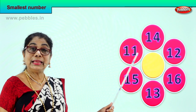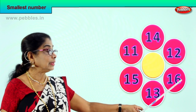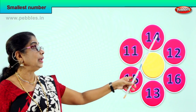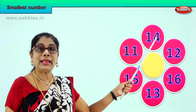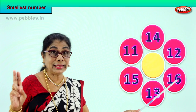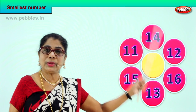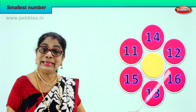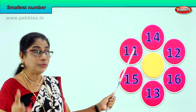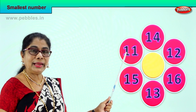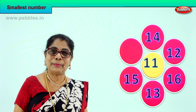Look — 11 has 1 ten, 15 has 1 ten, 13 has 1 ten, 16 has 1 ten, 12 has 1 ten, 14 has 1 ten. All numbers have only 1 ten, so let's go to the ones place. 14 has 4 ones, 12 has 2 ones, 16 has 6 ones, 13 has 3 ones, 15 has 5 ones, 11 has only 1. Which number has the least in the ones place? 11 has just 1 in the ones place. Therefore 11 is the smallest of all these numbers. We take and put that in the middle.